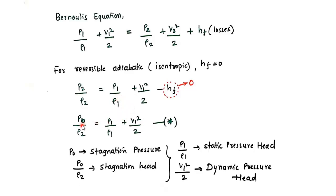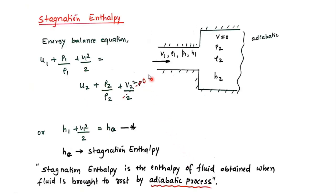Replacing p2 with p0 to denote stagnation conditions, the stagnation pressure relation becomes: p0/ρ2 = p1/ρ1 + v1²/2. Here, p0/ρ is the stagnation head, p1/ρ1 is the static head, and v1²/2 is the dynamic head.